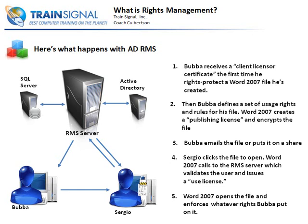Now Sergio opens up the document — or at least he tries. Word 2007 is going to make a call out to the RMS server and is going to check to see if Sergio is actually on the user list who gets to do something with the document. If he is — which in this case he is — then he gets to open it up like normal and perform anything that Bubba has allowed Sergio to perform. Word 2007, what we might call a Rights Management Services-aware application — Office 2007 is a major one — is actually going to enforce any rights that Bubba has placed onto the document.